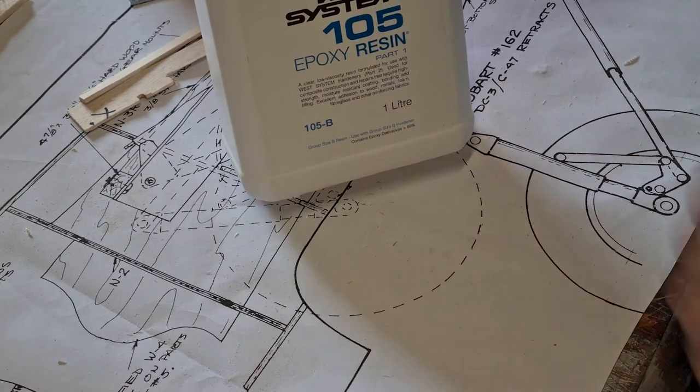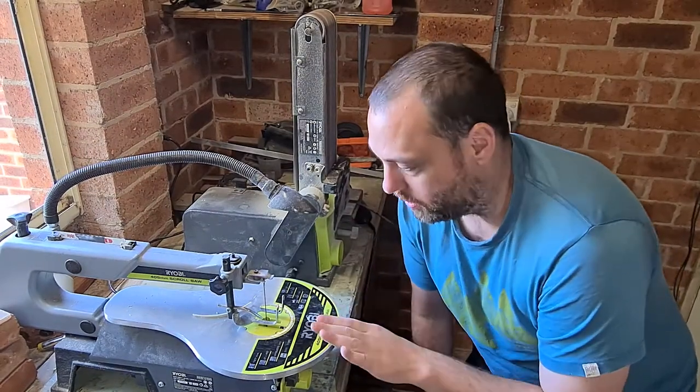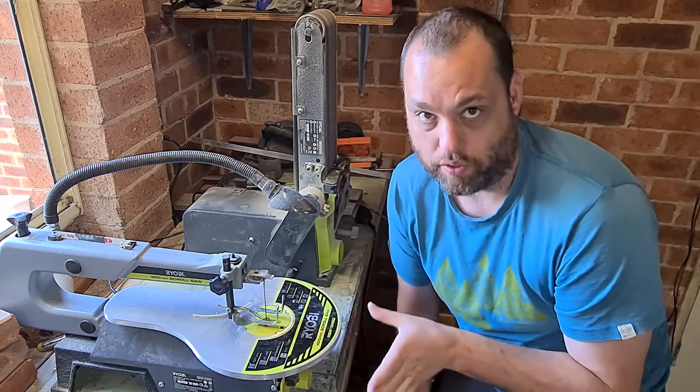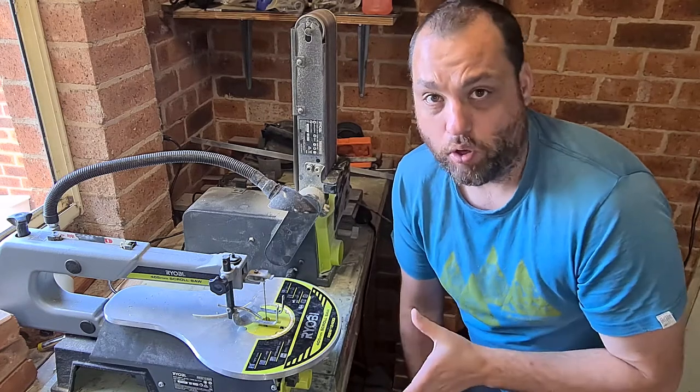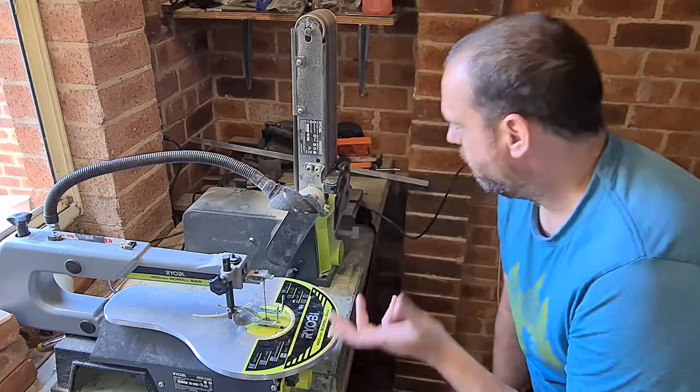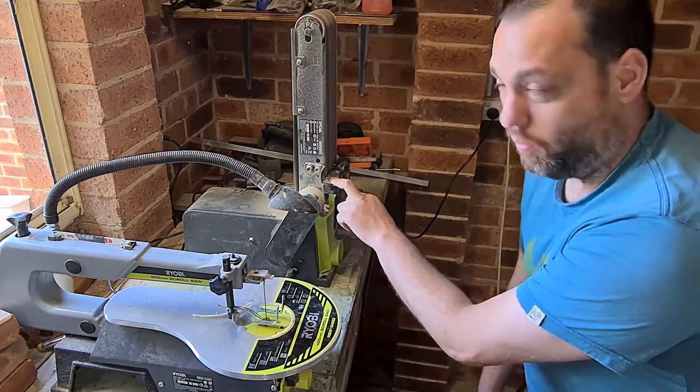Okay guys, so some of the more important tools I use are the scroll saw, which I use for all my formers for the fuselage. Sometimes the ribs, if they're a marine ply or a light ply, I'll do them on that. All the balsa ones I'll usually cut with a razor blade. Probably not essential, but something I use all the time, and I've only sort of recently acquired, is the belt sander.